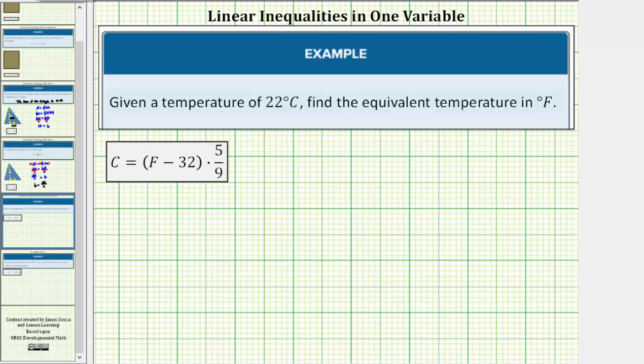Making the substitution, we would have 22 equals the quantity F minus 32 times 5 ninths. And let's put the 5 ninths in parentheses. Now our goal here is to isolate F on one side of the equation. Now we could distribute the 5 ninths, but then we'll have a fractional coefficient here minus another fraction.